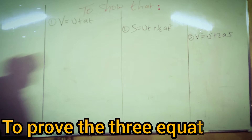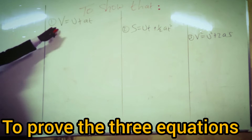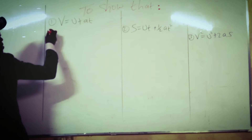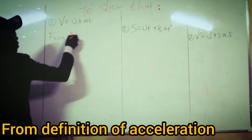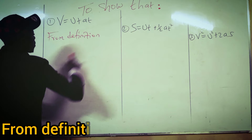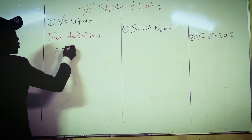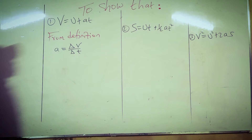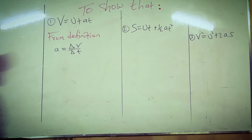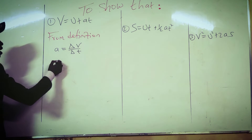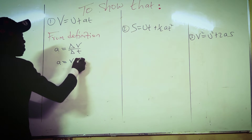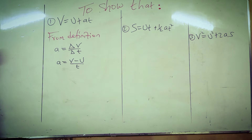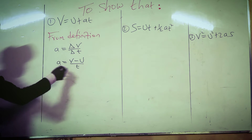So we want to prove whether indeed those equations are valid. We start with the first equation: V equals U plus AT. From definition, acceleration equals change in velocity divided by change in time. That means final velocity minus initial velocity, divided by time.